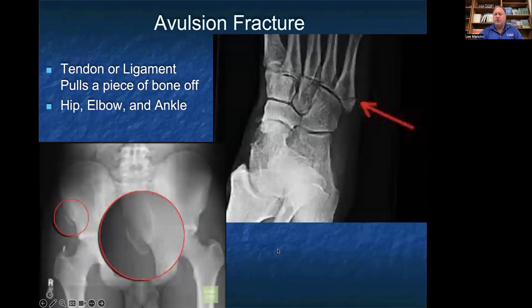Avulsion fractures are when a tendon or a ligament pulls and tugs a piece of the bone off. These are commonly found on the hip, the elbow, and the ankle. On the top right, you can see an avulsion fracture of the base of the fifth metatarsal, and on the bottom left X-ray, you can see an avulsion fracture from the hip.